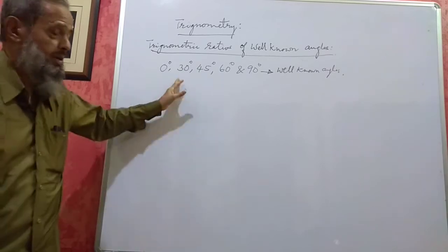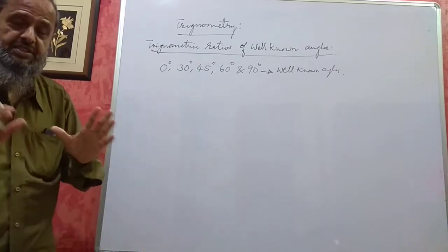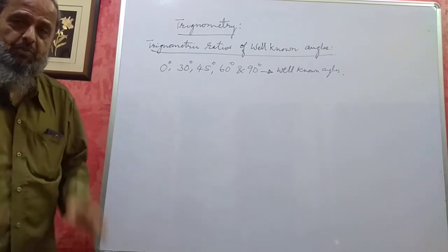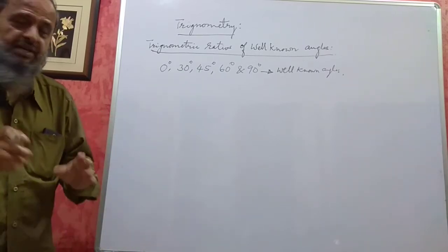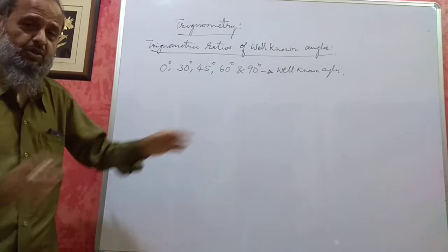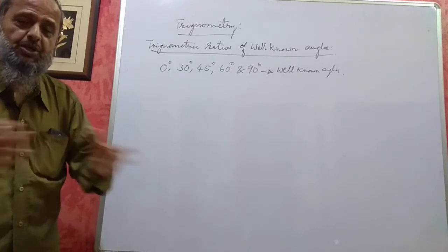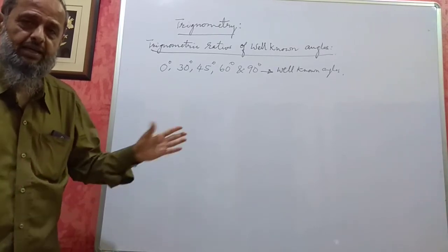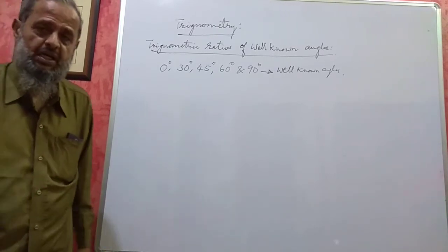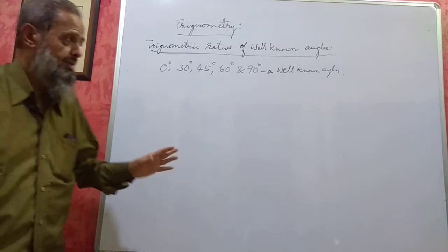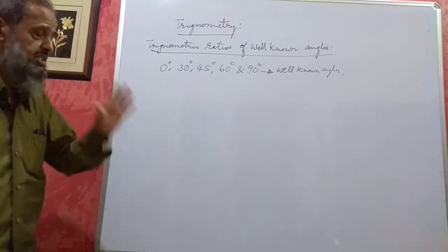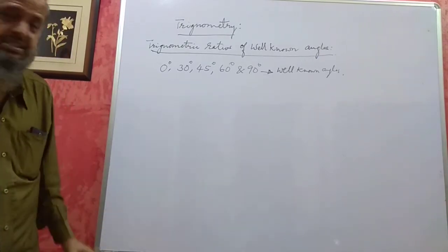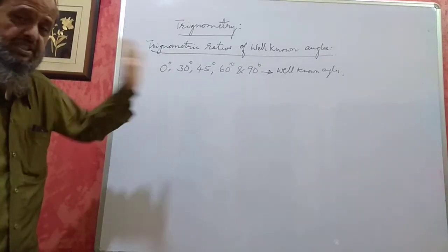For both 9 scheme and 15 scheme, there will definitely be a problem on this. They will say: find the value of this without using tables or a calculator. It will be a five marks problem — you can score five marks if you know this.